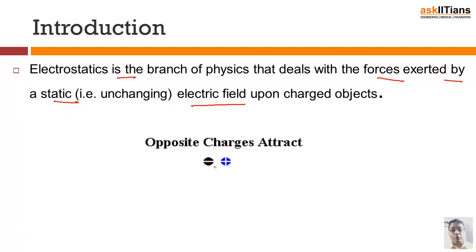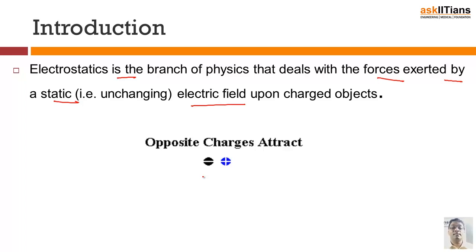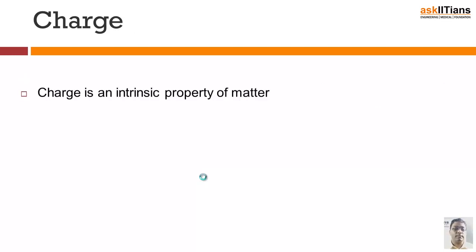The most important thing to understand here is that there are two types of charges: one defined as a positive charge, and the other defined as a negative charge. Just like opposite sexes are attracted towards each other, opposite charges are attracted towards each other. This is the key difference from the gravitational field: a gravitational field always has only one type of mass and is always attractive, whereas with charges, there are two types, giving us both an attractive force and a repulsive force.